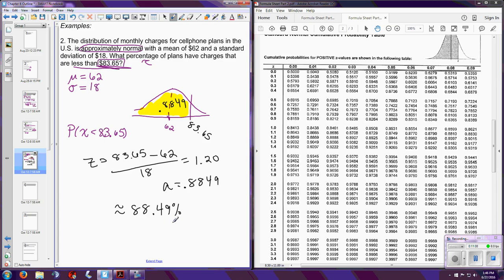So this is telling us that the area is 0.8849. In other words, the area under the curve here that we shaded in is 0.8849. Which is approximately 88.49%. So in the context of this problem, what percent of plants have charges that are less than 83.65? They're saying, according to this, about 88.49% of people are paying less than 83.65. We will return momentarily with the next couple examples.